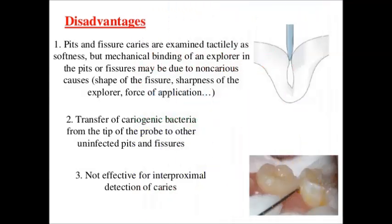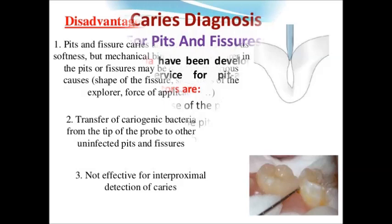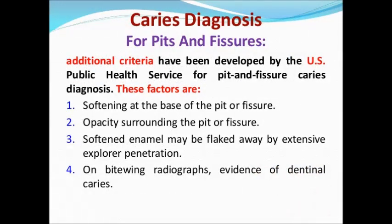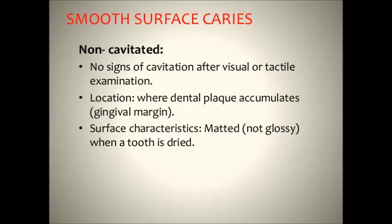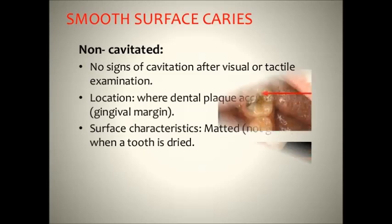The explorer is also not effective for interproximal detection of caries. For pit and fissure caries, softening is present at the base of the pit or fissures. Opacity surrounding the pit or fissures and softened enamel may be flaked away by extensive explorer penetration. For non-cavitated lesions, which are smooth surface caries, there are no signs of cavitation after visual or tactile examination. The surface is matted or not glossy when the tooth is dried.